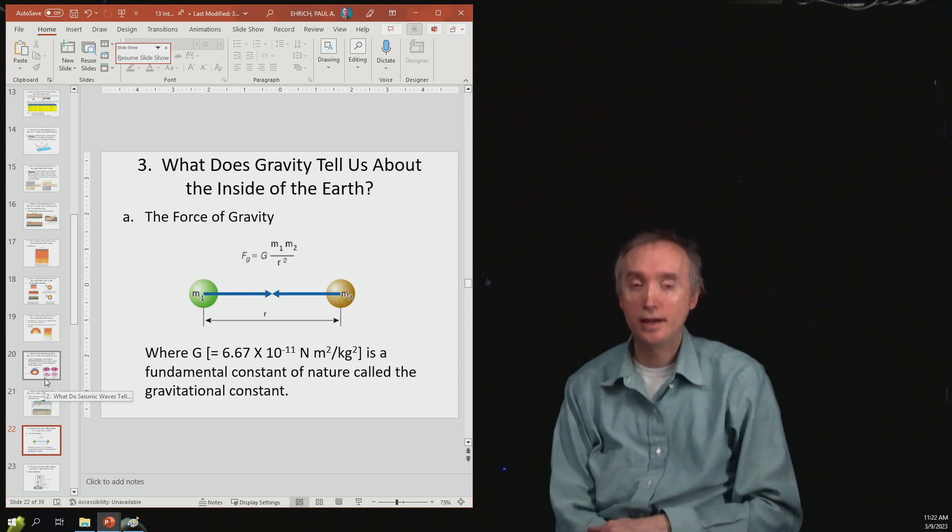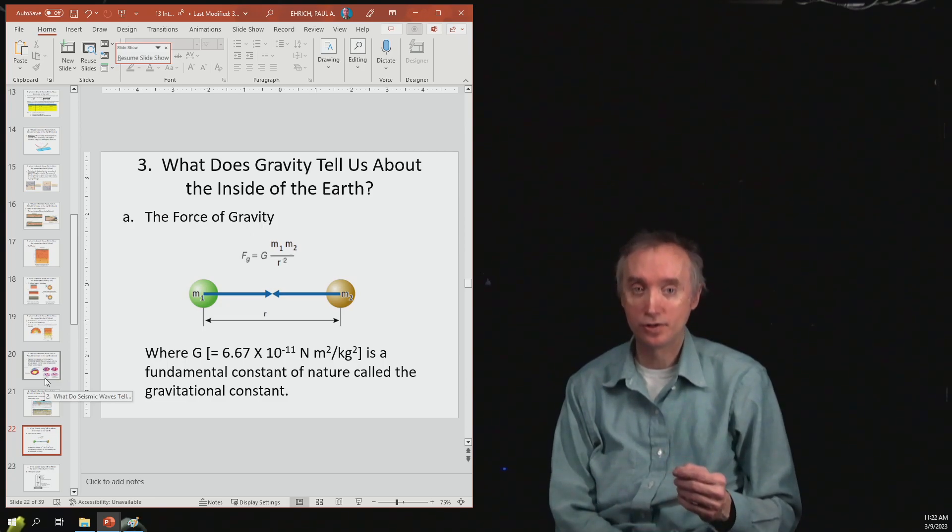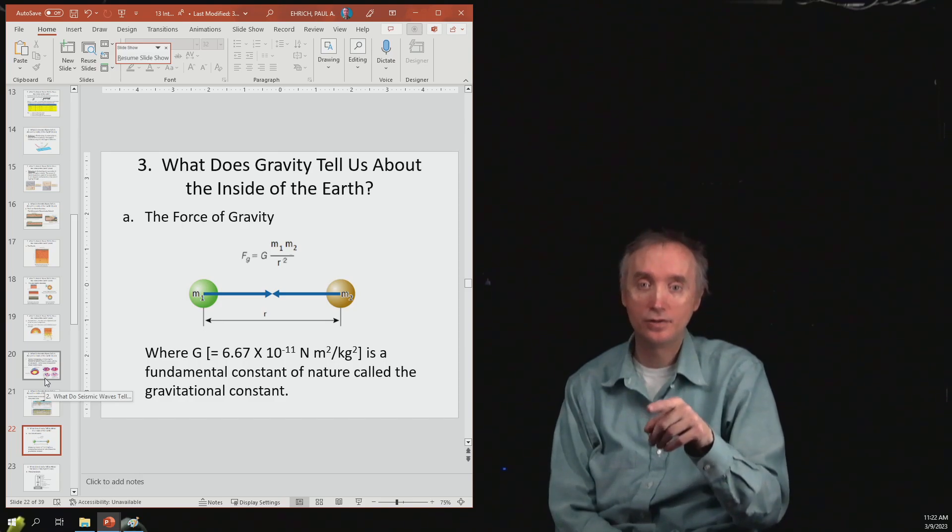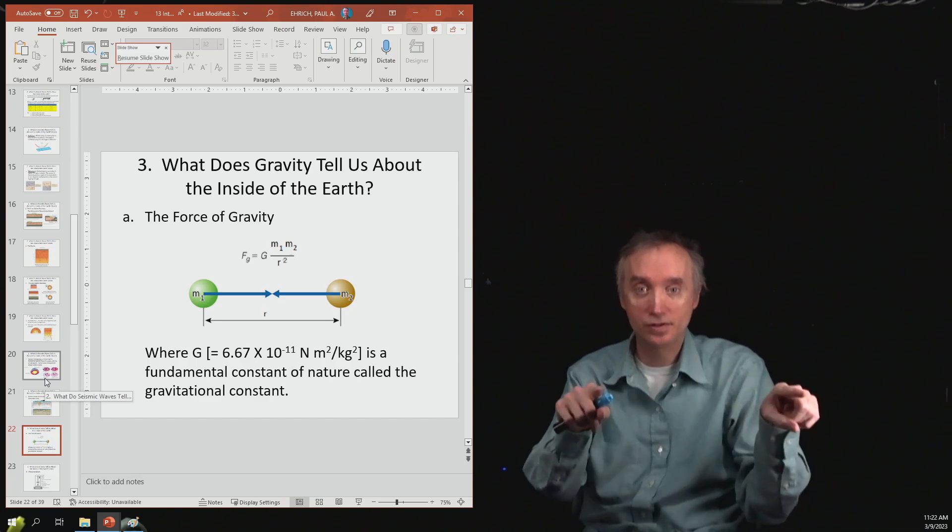Any force is a push or a pull. So the force of gravity would be the pull of gravity caused by mass. Any two objects that have mass are going to be pulling on each other. So here in this picture you see mass number one and you see mass number two, and they're separated by a distance r.